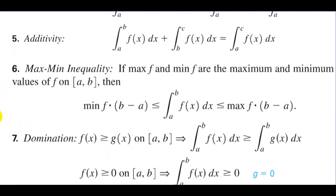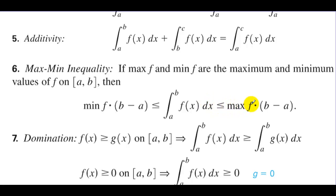Max-min inequality: if max-f and min-f are the maximum and minimum values of f on [A, B], then the minimum of f times (B minus A) is less than or equal to the integral of f(x), which is less than or equal to the maximum of f times (B minus A).